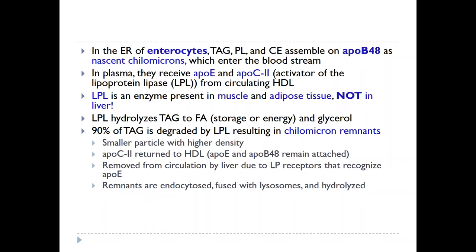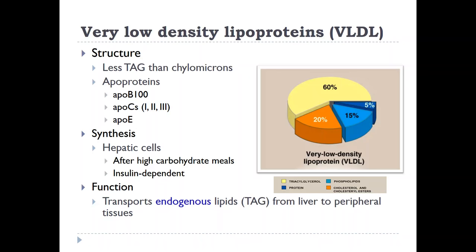Moving on to very low-density lipoprotein, which is in charge of the endogenous pathway for lipid metabolism. VLDL have less triacylglycerols than chylomicrons, hence their density is a little bit higher. They have three characteristic apoproteins: ApoB100, ApoC, and ApoE. Their synthesis occurs in the hepatocytes, usually after meals very rich in carbohydrates, and their production is insulin-dependent. Their major function is to transport endogenous triacylglycerols produced in the liver to the peripheral tissues, specifically adipose tissue and muscles.